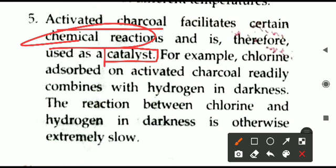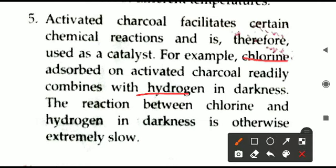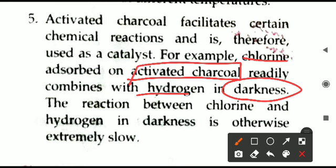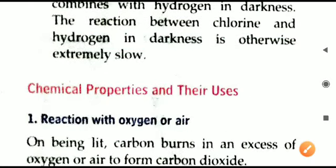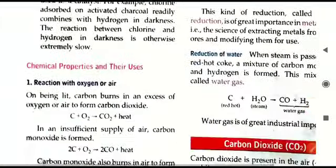Activated charcoal also facilitates various chemical reactions and is used as a catalyst — a substance that increases the rate of a reaction. For example, hydrogen and chlorine react with each other normally, but it is a very slow process requiring some light. In darkness, hydrogen and chlorine will not react. However, if activated charcoal is present in the same reaction in a dark room, it acts as a catalyst and hydrogen chloride gas (HCl) is produced.